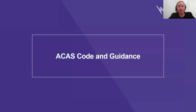Moving on to the ACAS code and guidance. As well as being familiar with your own internal disciplinary procedure, you should be aware of the ACAS code of practice on disciplinary and grievances. This sets out certain minimum requirements, and if employers don't comply with this, compensation in certain employment tribunal claims can be increased by up to 25%. Employers' own disciplinary procedures should, as a minimum, be ACAS code compliant.